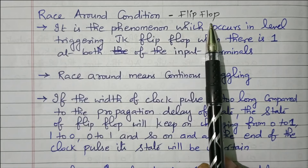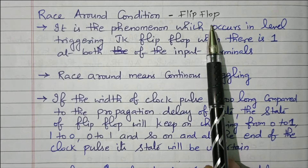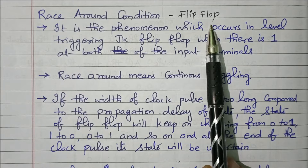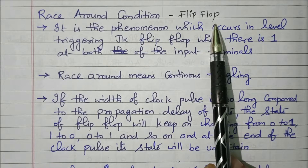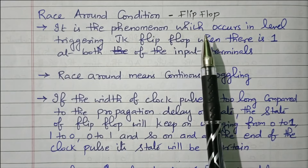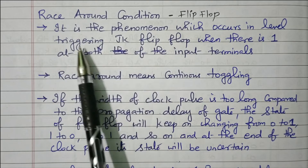We know that a flip-flop is the storage element. It can store 1-bit data. The output depends upon the early available output as well as input — the input and present state of output will decide the next state of output. That is the basic of the flip-flop. So what is the race around condition?